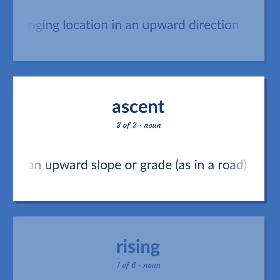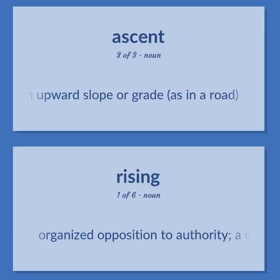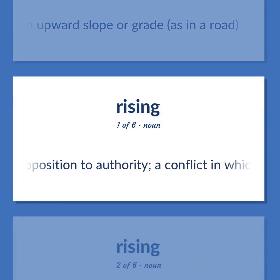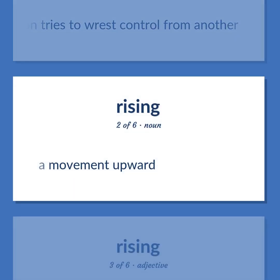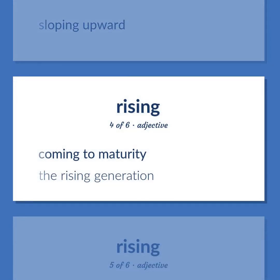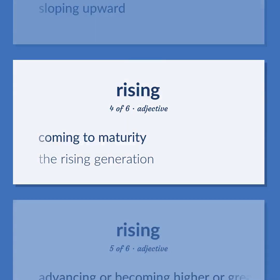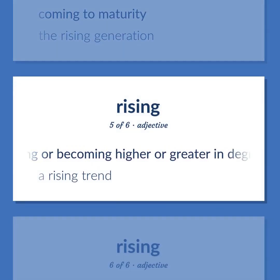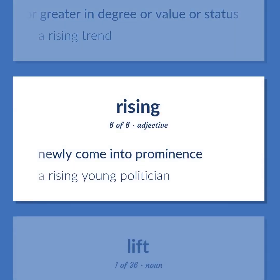An upward slope or grade, as in a road. Uprising. Organized opposition to authority; a conflict in which one faction tries to wrest control from another. Rising. A movement upward. Sloping upward. Coming to maturity — the rising generation. Advancing or becoming higher or greater in degree or value or status — a rising trend. Newly come into prominence — a rising young politician.